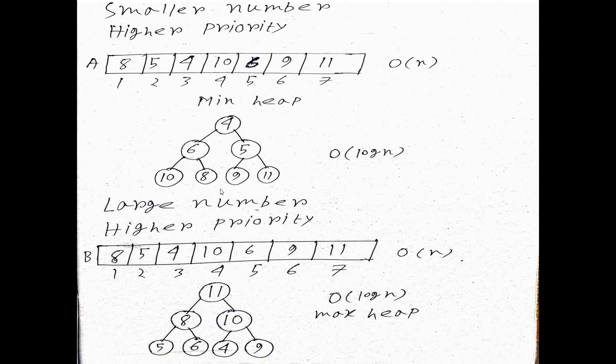How do you create a min heap or max heap? The condition for min heap is that every parent is smaller than its child, and the root holds the minimum element. The condition for max heap is that every parent is greater than its child, and the root holds the maximum element.